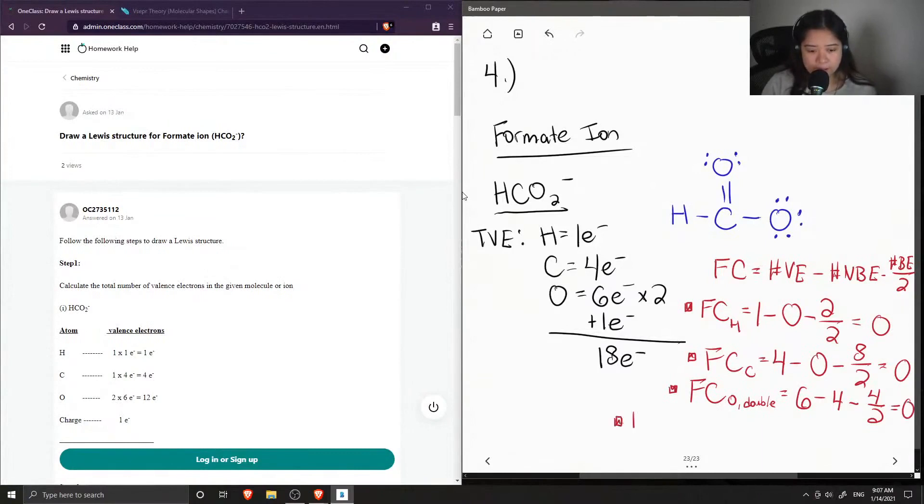And now let's do the formal charge of our single bonded oxygen. So this still has six valence electrons. The number of non-bonding electrons is six. And there's only a single bond to this oxygen. So there's two bonding electrons divided by two. So in the case of the single bonded oxygen, it has a formal charge of negative one.